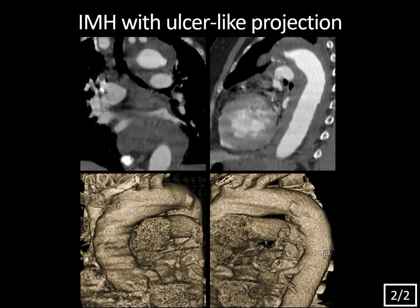So this is an intramural hematoma with an ulcer-like projection. When you see an ulcer-like projection like this, it indicates there is actually a small intimal tear or intimal injury with associated blood flow protruding into the media. You see this most commonly in the ascending aorta and the aortic arch, like in this case. It's an important finding to detect because there is a risk that this ulcer could enlarge and rupture, and it can also evolve into a dissection or an aneurysm. So whenever you see an ulcer-like projection, it's usually an indicator for treatment of the intramural hematoma, even if that hematoma otherwise has non-aggressive features.